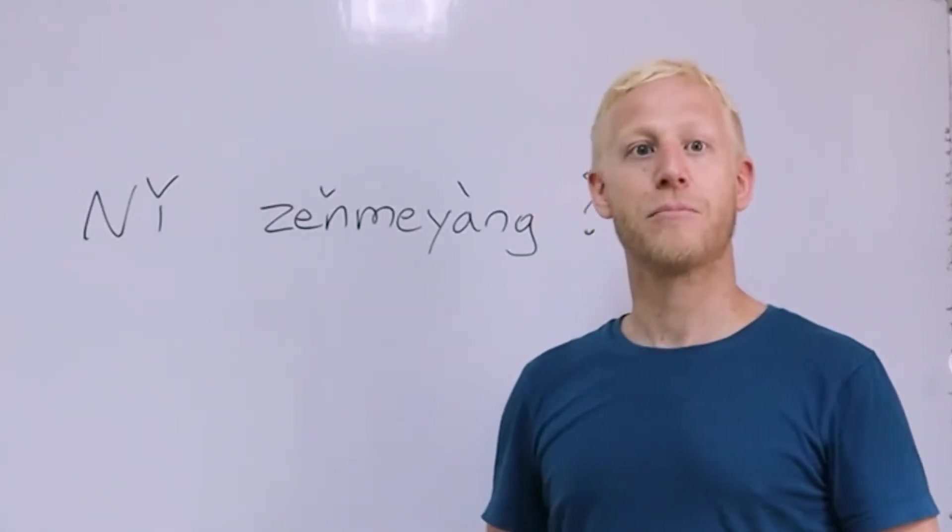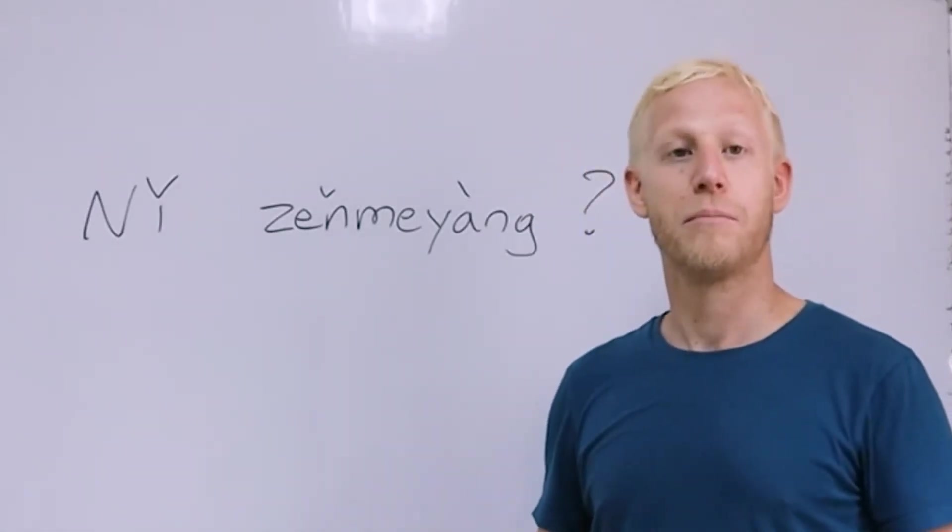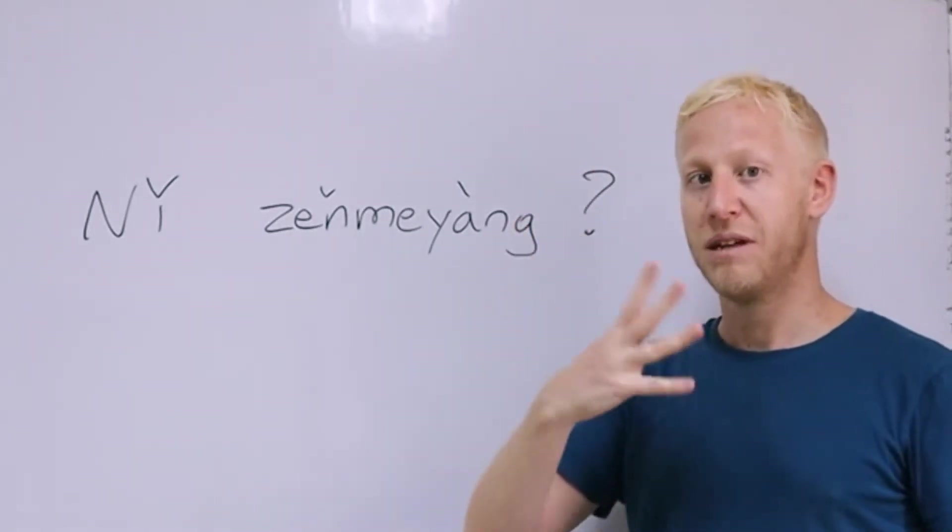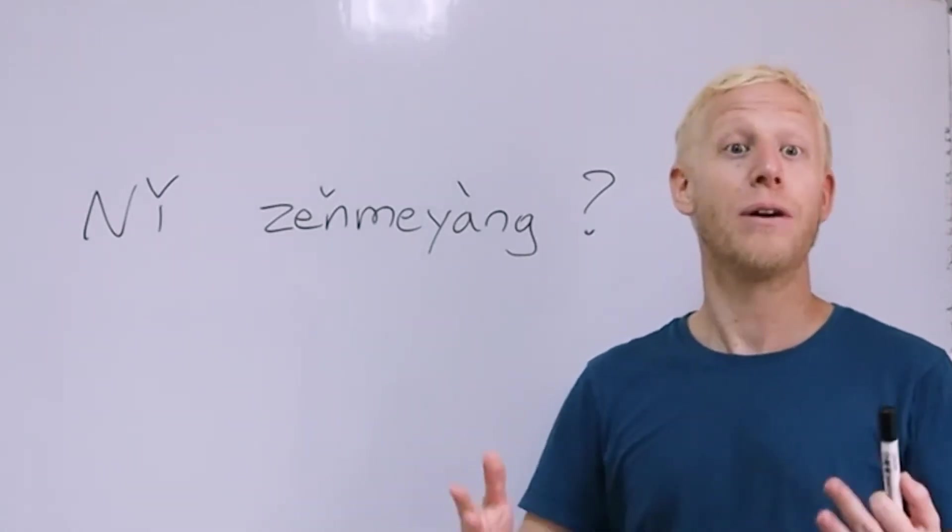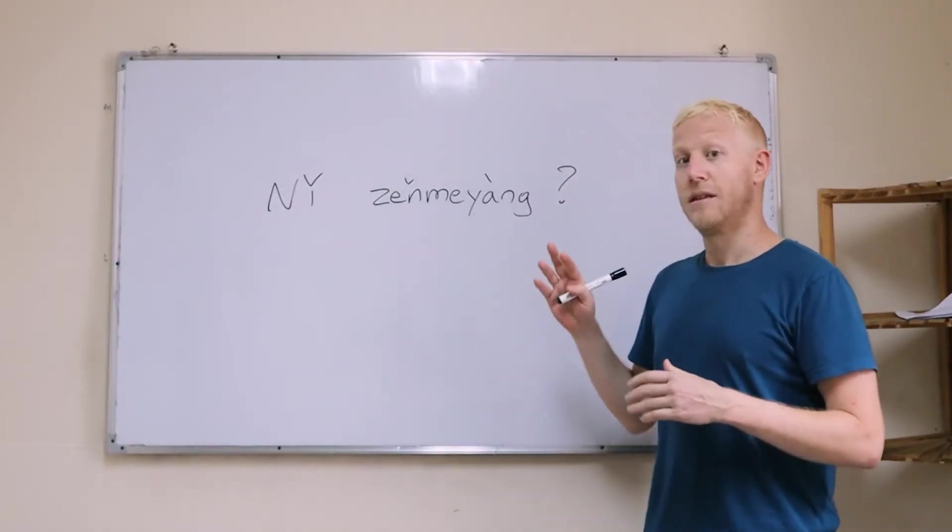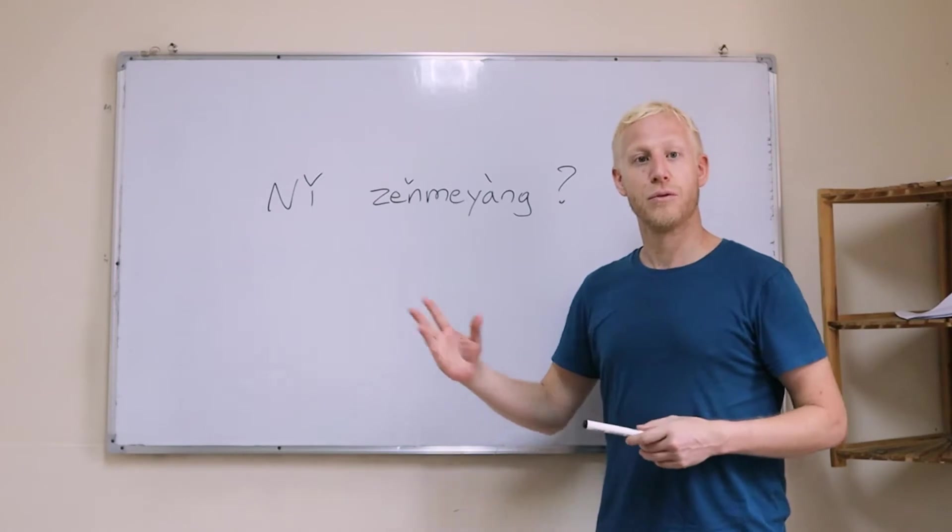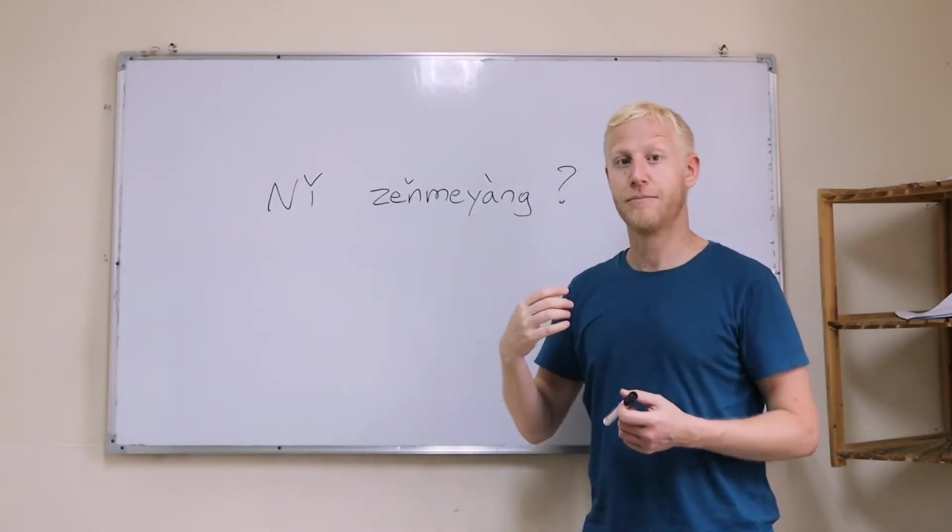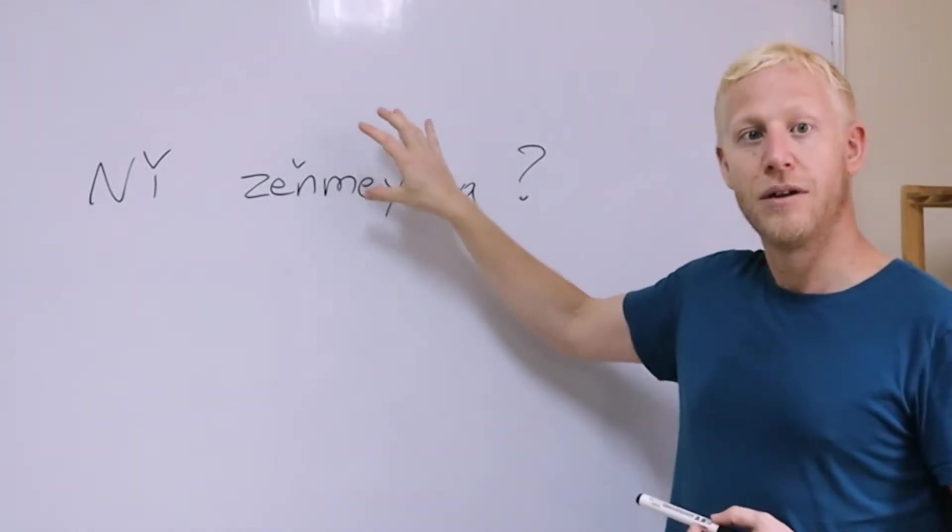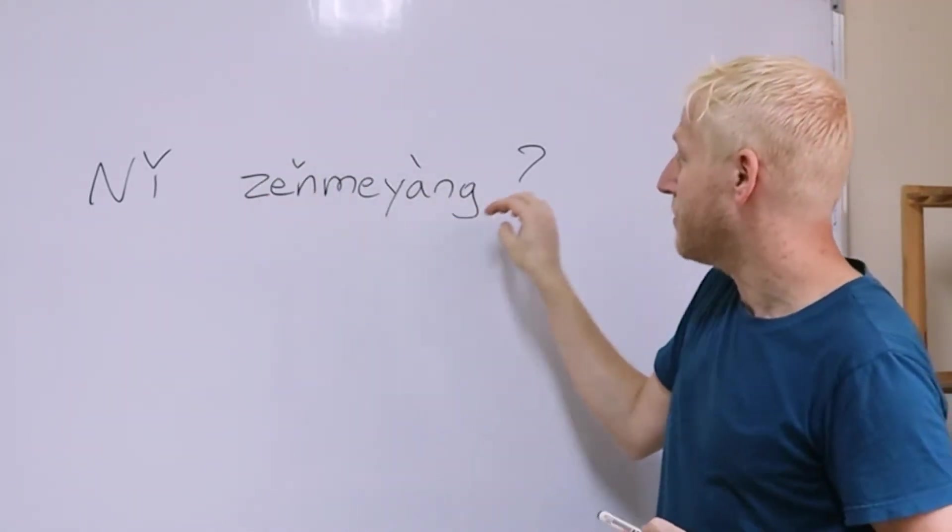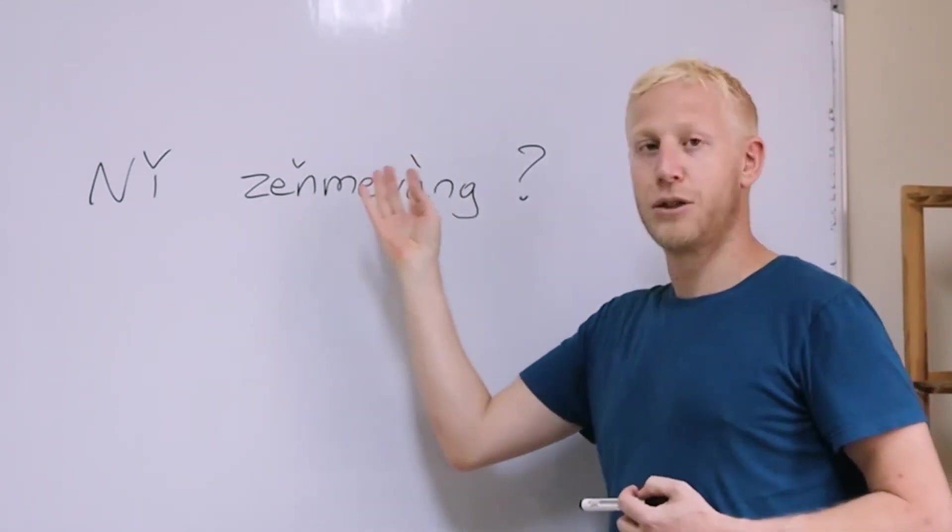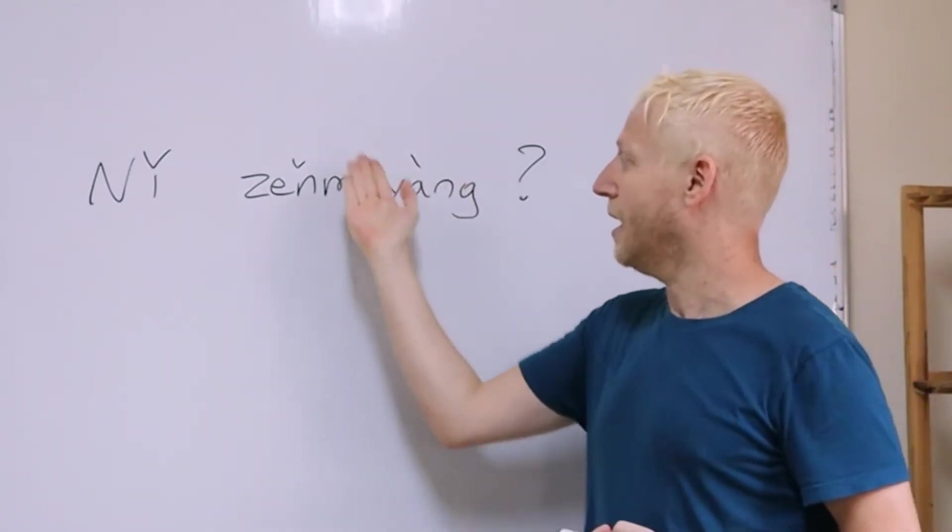你 if you remember from our first class means you. 怎么样 means something like how is. So similarly to what we learned with the question what in the first video, the question word how is comes after the noun. So it comes where the answer would be. So how are you?